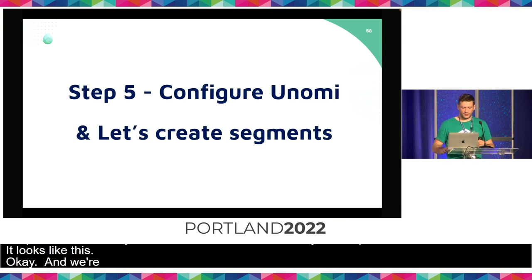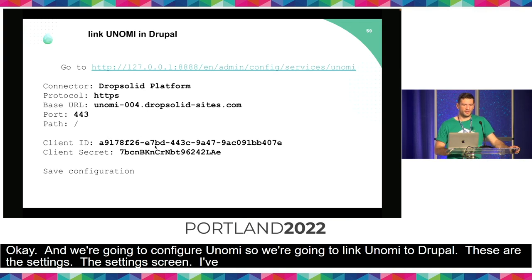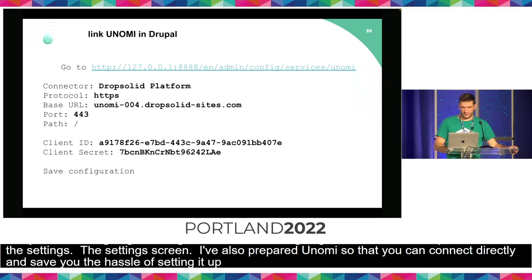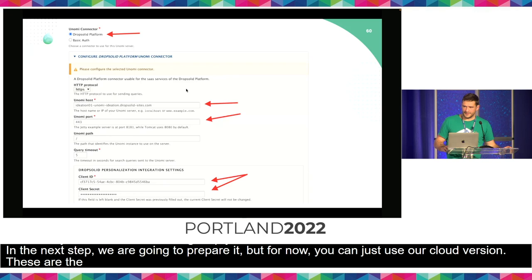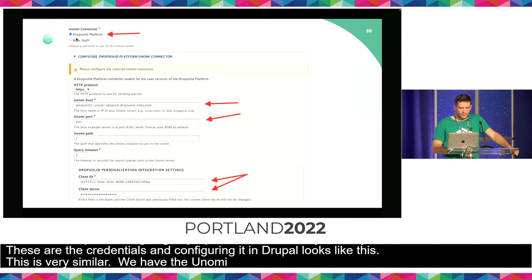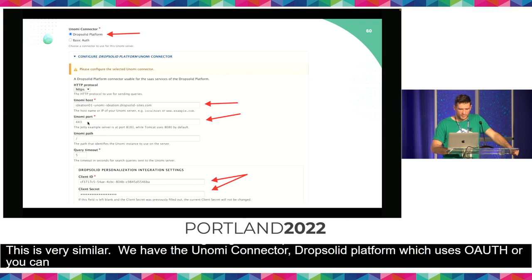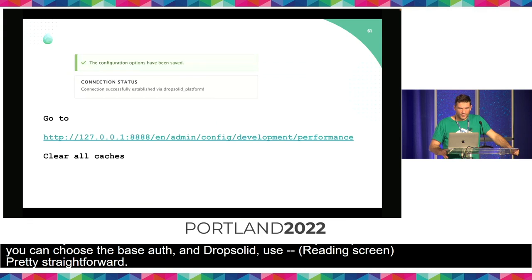Then we're going to configure Unomi and link it to Drupal. I've also prepared Unomi client ID and secret so that you can connect directly, which saves you the hassle of setting it up yourself. In the Drupal Unomi connector settings, you choose the DropSolid platform which uses OAuth, or you can choose the basic auth one. Put in the Unomi host and Unomi port. For DropSolid, use the personalization integration settings with client ID and secret. If you use the basic auth, it gives you a username and a password. When you save these fields, you have successfully connected to the deployed platform. After that — we're working with Drupal — don't forget to clear the cache.